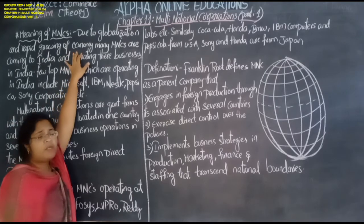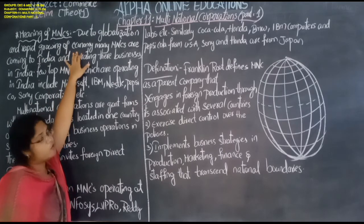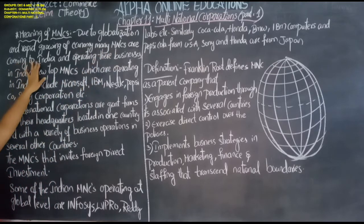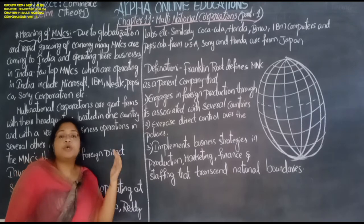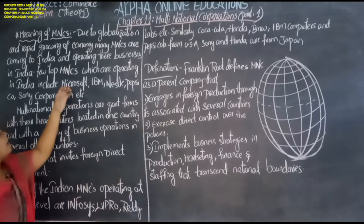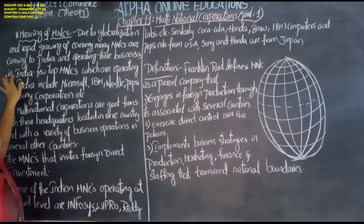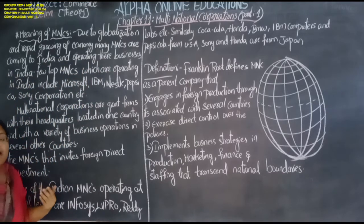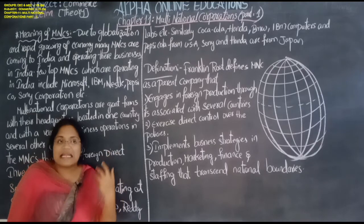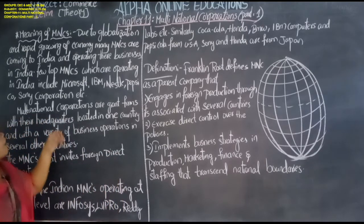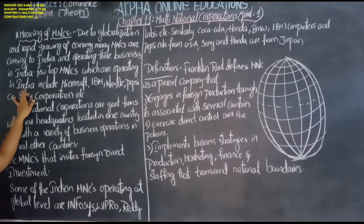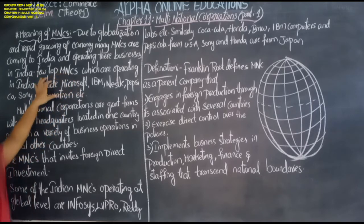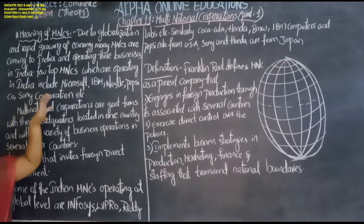Rapid growth of the economy means development in the economy. Due to this, some multinational companies are coming to India to do business and operating their business here. Operating means they are starting their business in India. Let us look at a few top MNC companies which are operating in India — that is, those whose branches are in India.